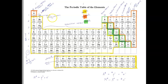Valence electrons are the electrons found on the outermost ring. So if I ask you how many valence electrons bromine has, you look at the top of its column and it says 7A, so there are seven valence electrons. For boron, it says 3A above its column, so it has three valence electrons.